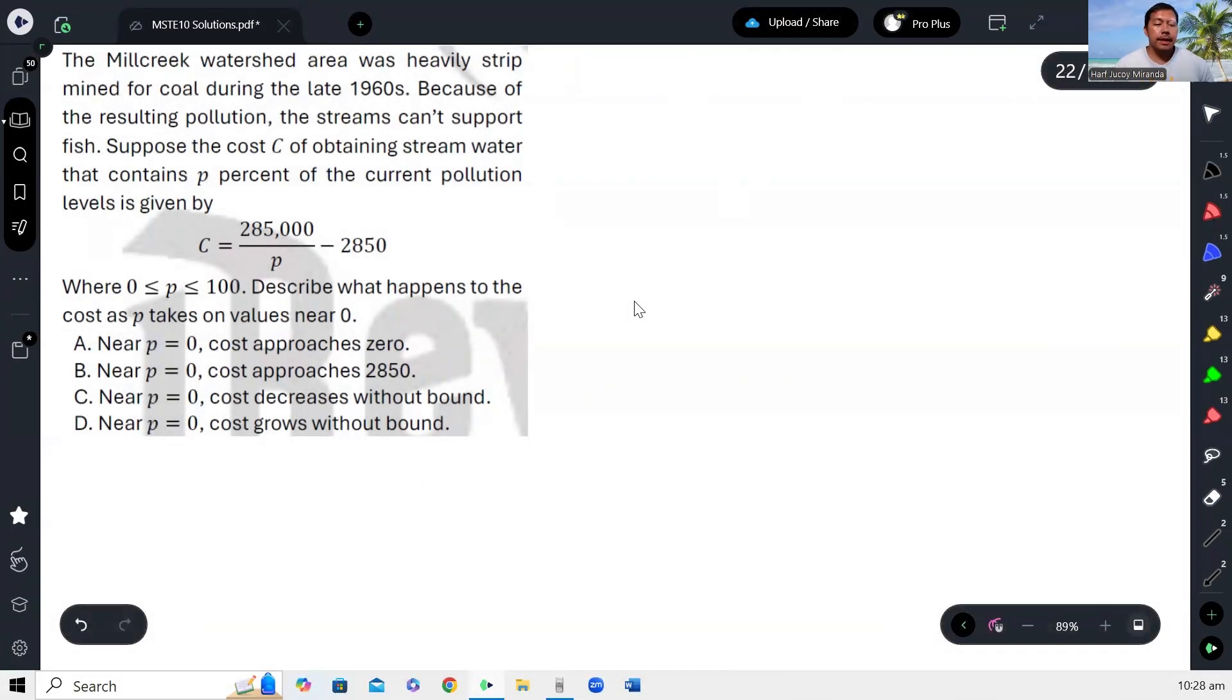Okay, next. The Mill Creek watershed area was heavily strip-mined for coal during the late 1960s. Because of the resulting pollution, the streams can't support fish. Suppose the cost C of obtaining stream water that contains P percent of the current pollution levels is given by C equals 285,000 over P minus 2,850, where P is between 0 and 100.